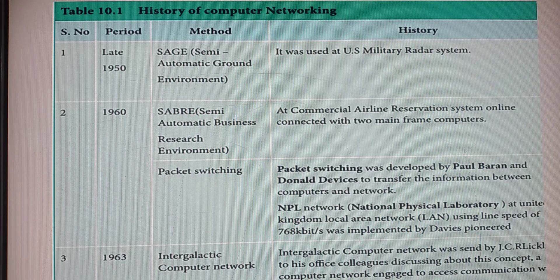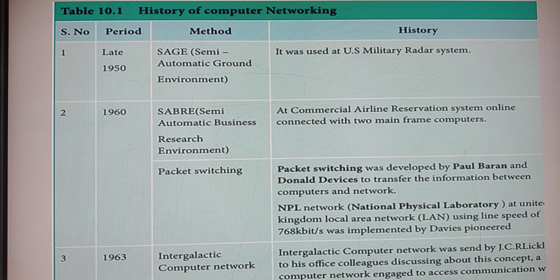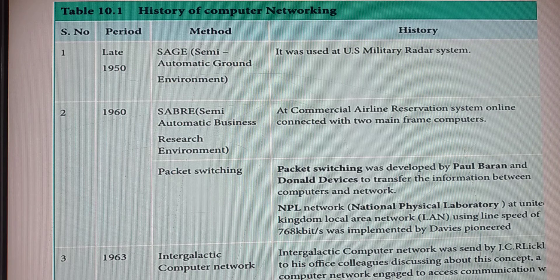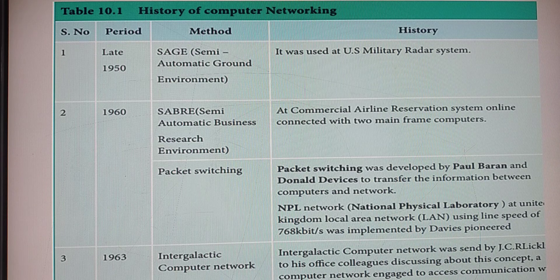In 1963, JCR Licklider sent a message over the computer network to his colleagues under the concept of the Intergalactic Computer Network. He discussed how communication access works and how users are able to use the network — everything discussed under this concept in the year 1963.